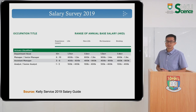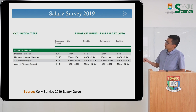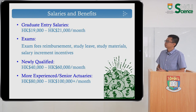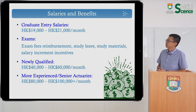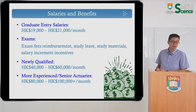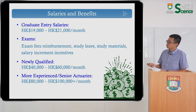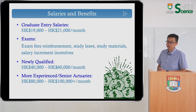How about the salary this year? This is a newly released survey, and the numbers are roughly the same as in past years. To sum up: if you are a fresh graduate, you will be earning about $20,000 per month. The company will reimburse your exam fees, give you study leave before exams, and also provide study materials. If you are newly qualified — after a few years of experience becoming a qualified actuary — your income will be around $40,000 to $60,000 per month.